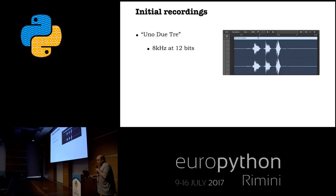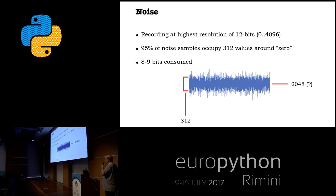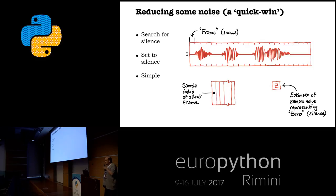I have some recordings made earlier. I'll play back an initial recording at 8 kilohertz — that's one, two, three — but you'll notice it's very, very noisy. That's at 12 bits, 8 kilohertz. When you analyze the noise, you discover that of your 4,000 samples, around 300 or so are just noise — it's a very noisy signal on this board for a number of reasons, and you're losing quite a bit of information.